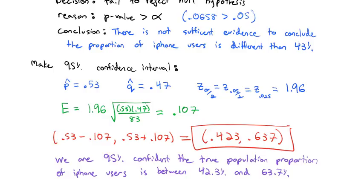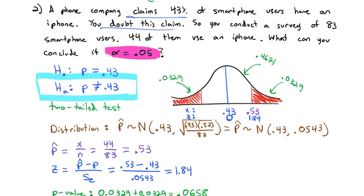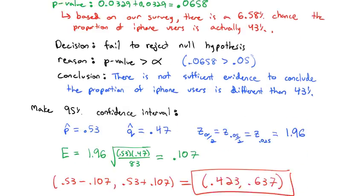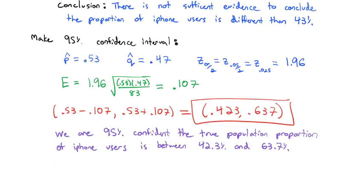In context, we are 95% confident the true population proportion of iPhone users is between 42.3% and 63.7%. Notice that the null hypothesis said the proportion was equal to 0.43, and 43% is within that confidence interval. That's why we cannot reject it — it still is a valid possibility for the true population proportion of iPhone users.